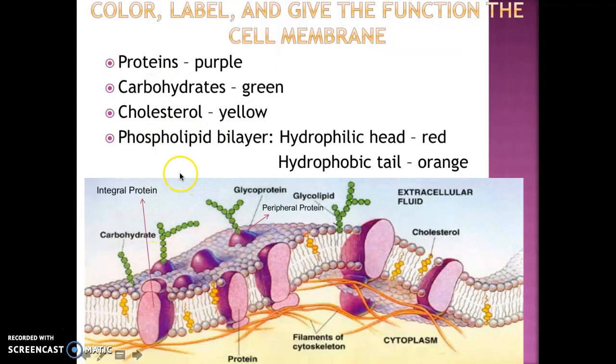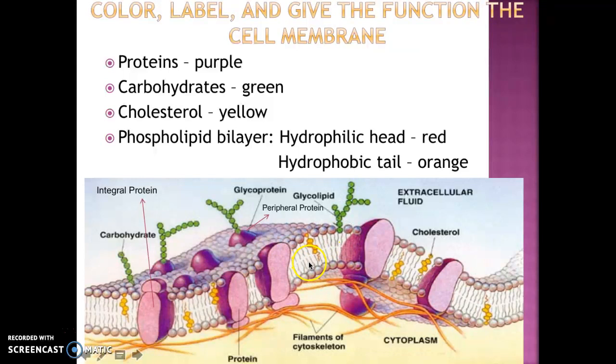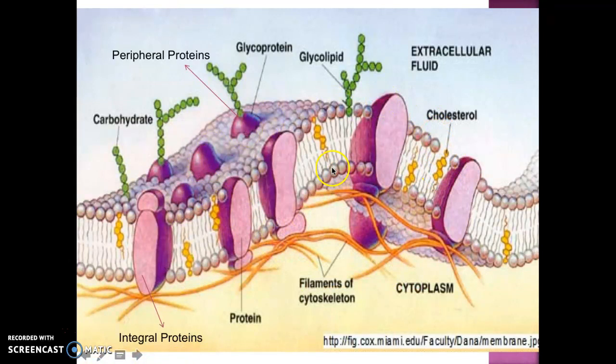We're going to do an assignment shortly that will require you to paint the different parts using a different color code for each: proteins are purple, carbohydrates are green, cholesterol is yellow, the hydrophilic heads are red, and the hydrophobic tails are orange. This is all that we probably need to know about the cell membrane. Remember the different parts and try to write a summary for your Cornell notes. I'll see you on the next video. Thank you for watching, and take care of yourselves.